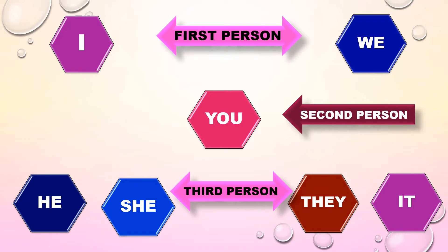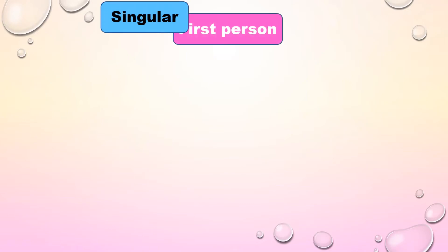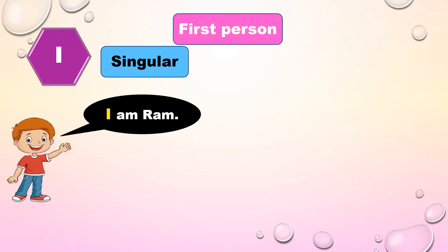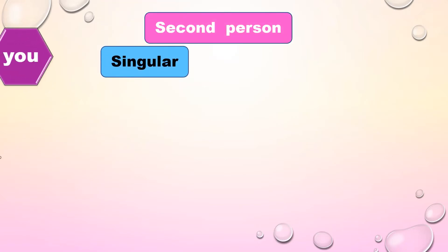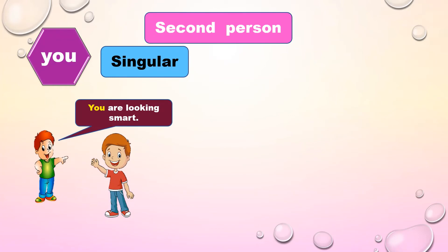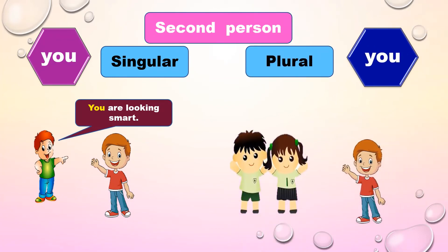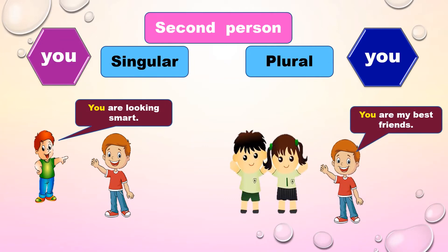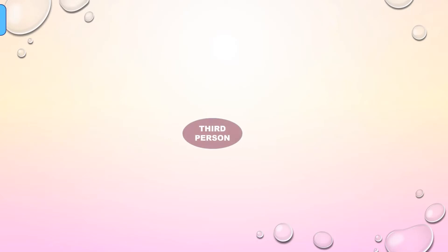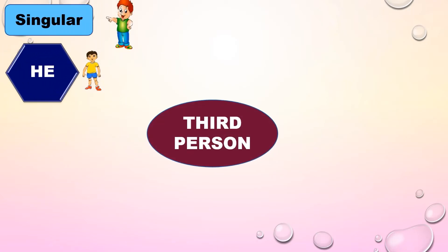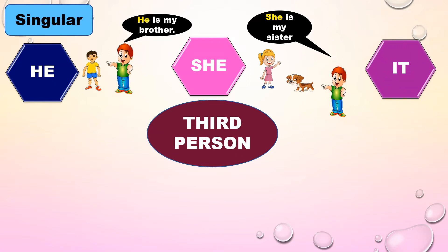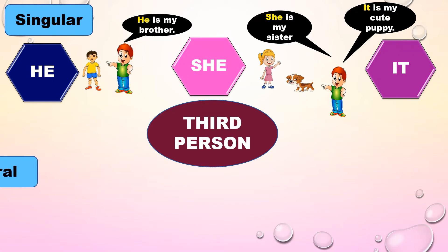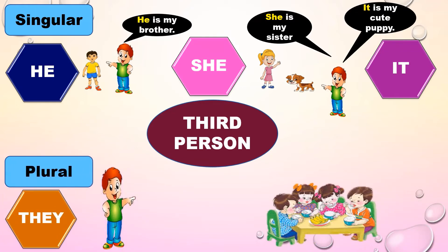It, although it denotes the thing spoken of, is also called a personal pronoun of the third person. First person singular: I — I am Ram. First person plural: we — we are happy. Second person singular: you — you are looking smart. Second person plural: you — you are my best friends. Here in the second person, you is used both in the singular and plural. Third person singular: he — he is my brother; she — she is my sister; it — it is my cute puppy. Third person plural: they — they are my friends.